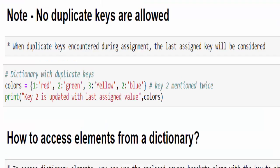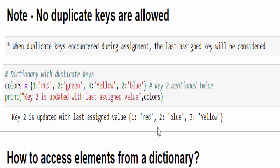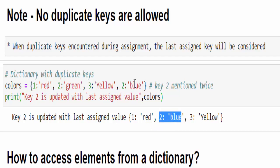One more important note: in dictionary, no duplicate keys are allowed. In this example, we can see key 2 is mentioned twice—one is for green, another one is for blue. But when we execute it, it will display in the output only once and will take the last assigned value. Here, the last assigned value is blue. This is one of the interview questions.